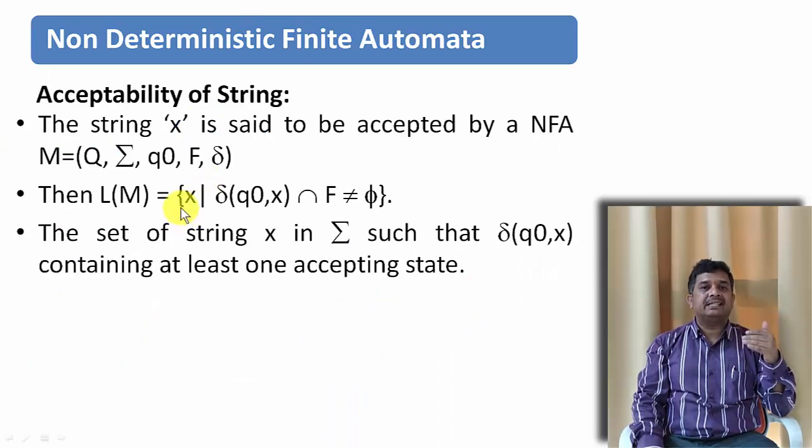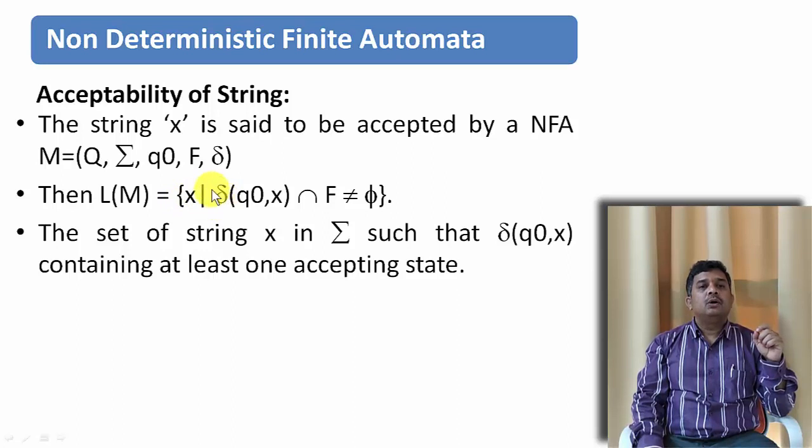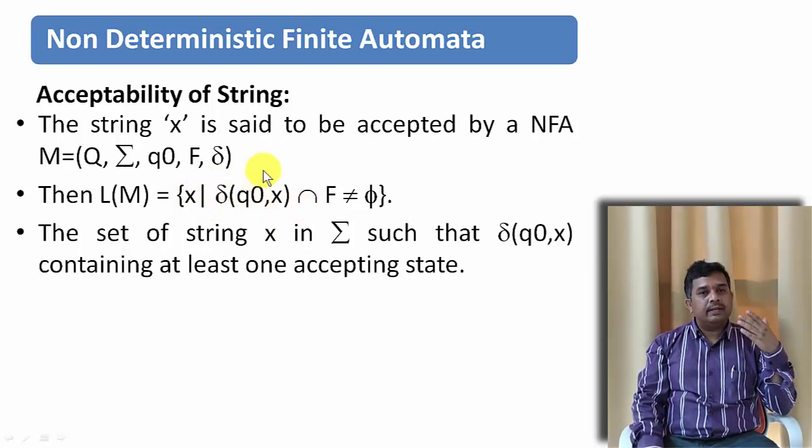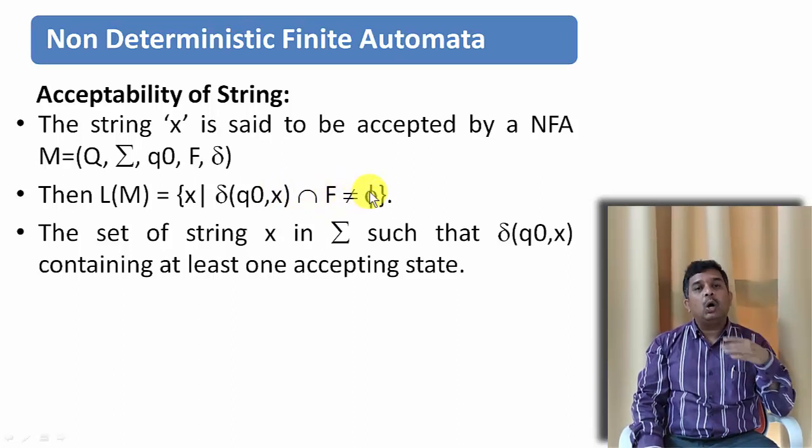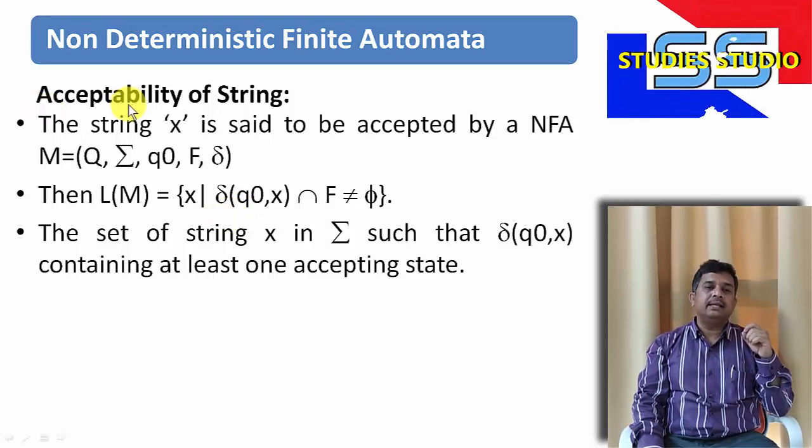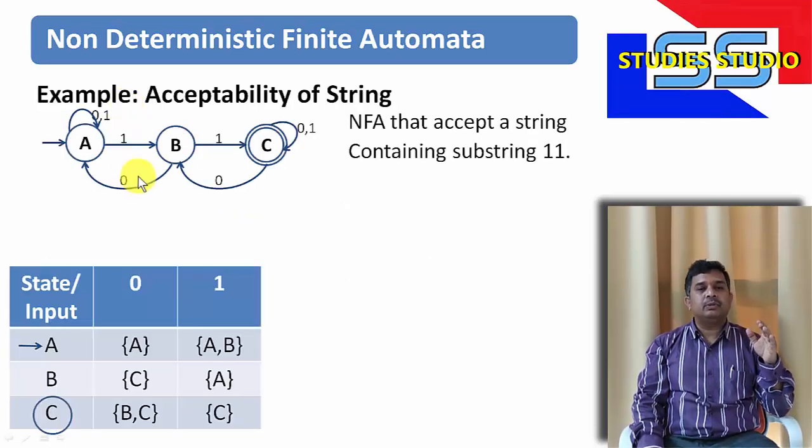Let us see how to define acceptability under NFA. Let X is a string and that set to be accepted by the NFA, M, Q, Sigma, Q0, F and Delta. We can say the string X is accepted by this particular machine if this X, if we take transition from the starting state, we will reach to a state. And that particular state and the set of final states, if we take intersection, if it is not phi. Or in other words, if I want to say, this transition will take me to at least one accepting state or final state. Then I will say the string is accepted. Let us try to understand this with the help of this example.